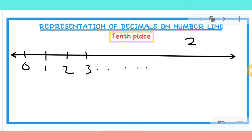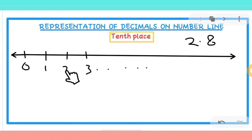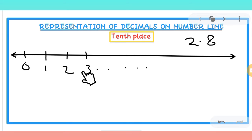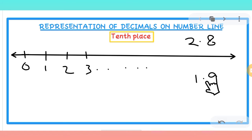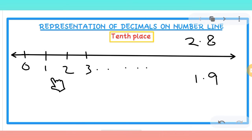For example, if we have to represent 2.8, we look at the number before the tenths place, which is 2. That means 2.8 will come between 2 and 3, because 2.8 is greater than 2 but less than 3. Similarly, 1.9 is greater than 1 but less than 2, so it will come in between 1 and 2.